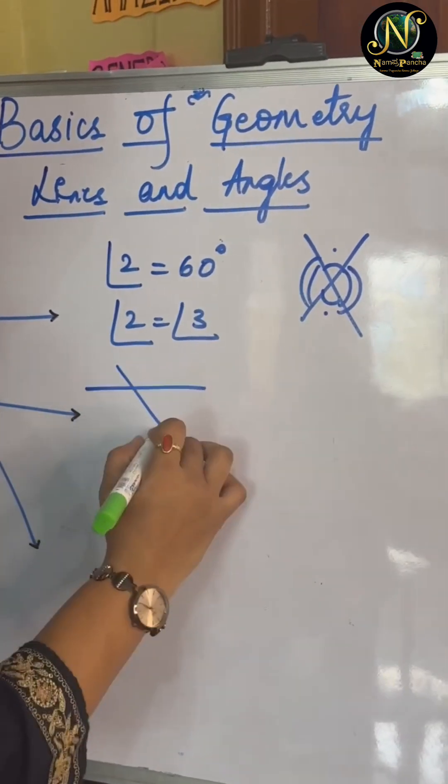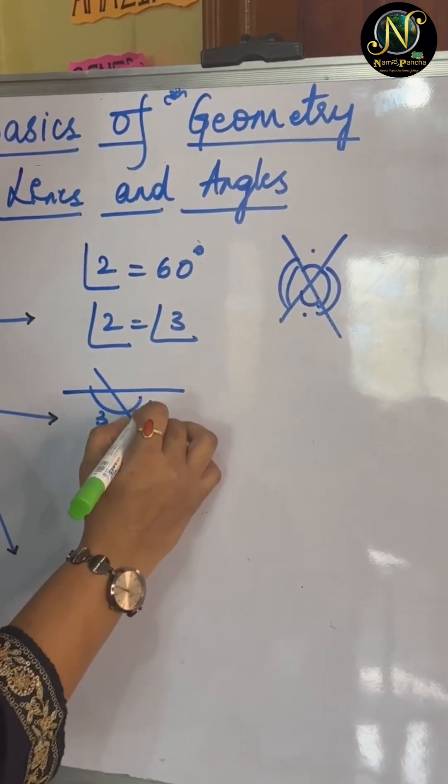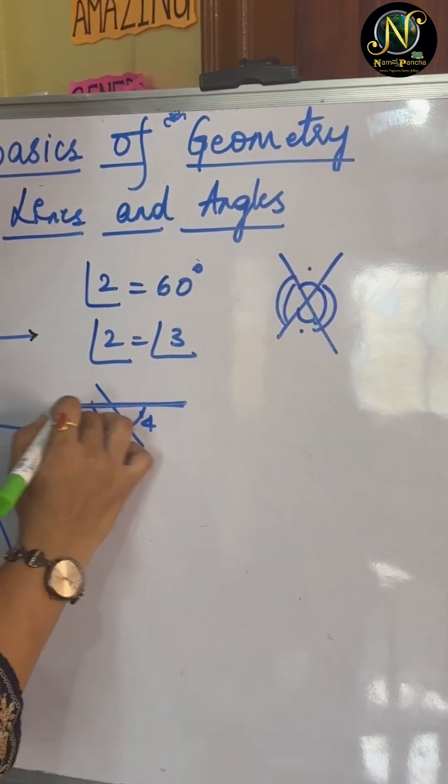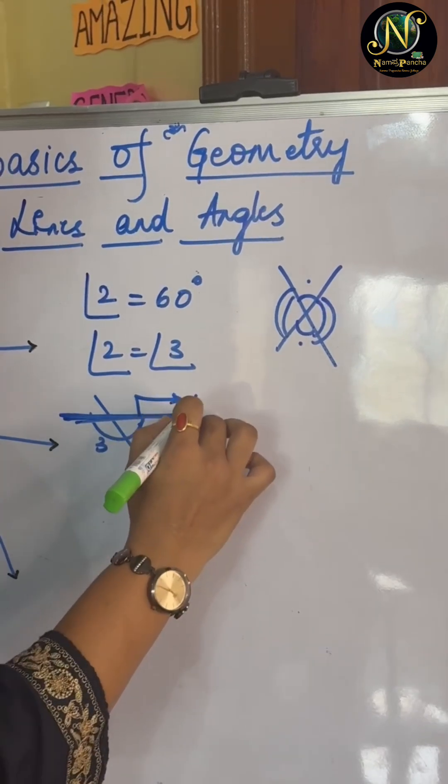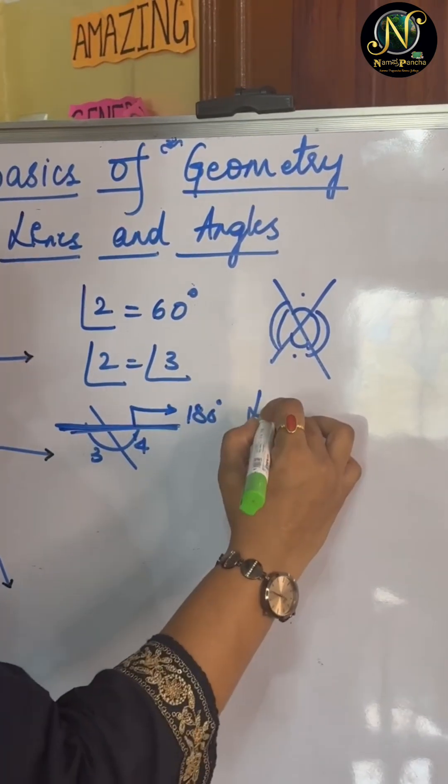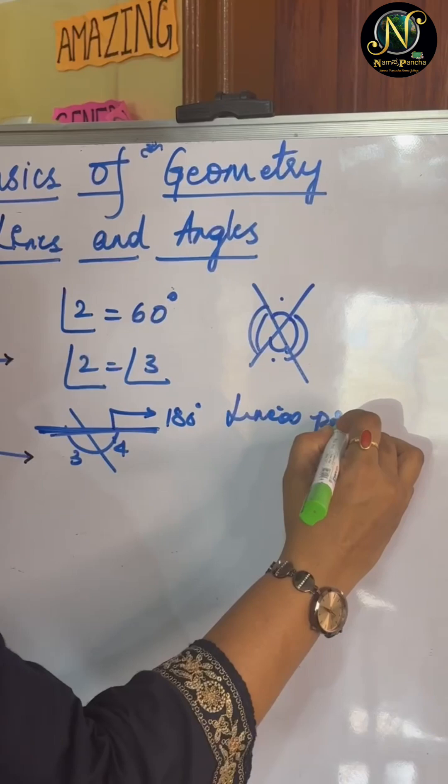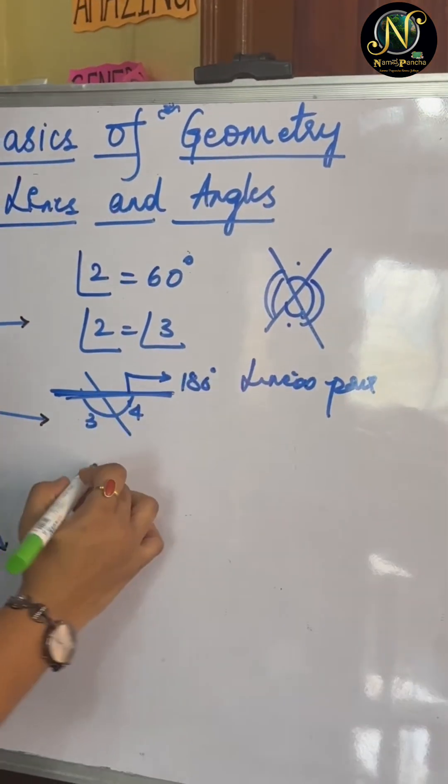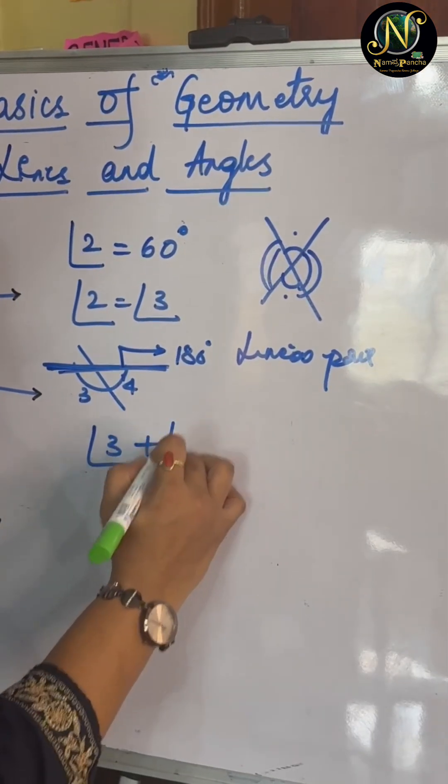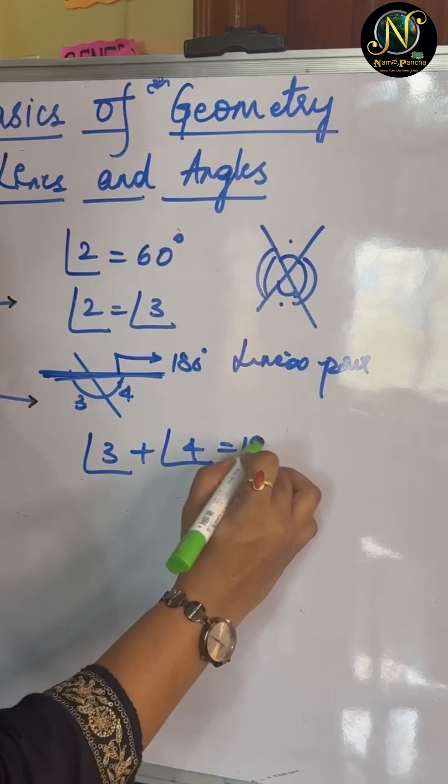Now, 3 and 4 angles, you can see here it is forming a straight line. That is, it is forming 180 degrees. We call it as linear pair. So according to that concept, angle 3 plus angle 4 is equal to 180 degrees.